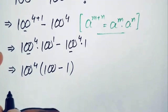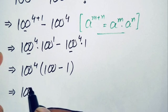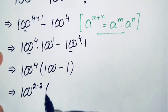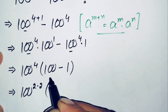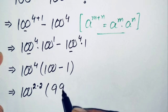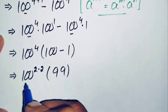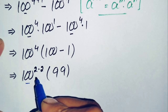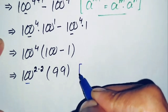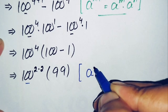Next, we can write 100 raised to the power 4 by factorizing the exponent 4 as the product 2 times 2. And here 100 minus 1 gives us 99. Now in this term, 100 raised to the power 2 times 2, we will use another exponential math property.